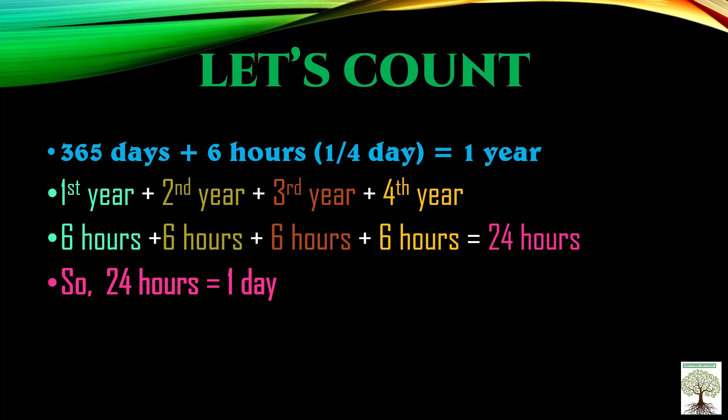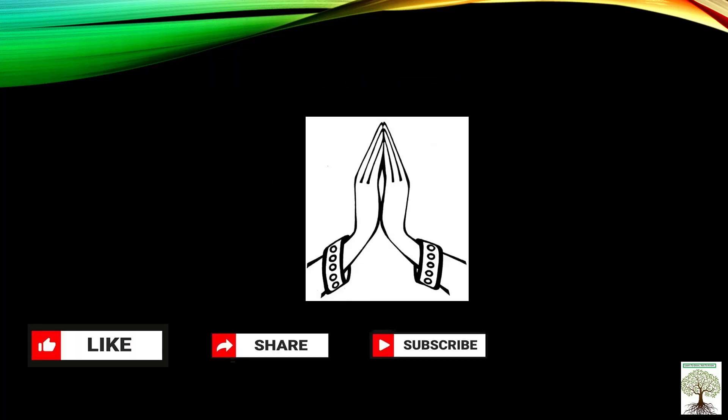At an interval of four years, these extra six hours from each year get added to make one full day — 24 hours equals one day. So every fourth year, one extra day is added to the month of February, and thus the year with an extra day is known as the leap year. I hope this concept is understood — thank you, like, share, and subscribe to my channel Learn to Grow Not to Know.